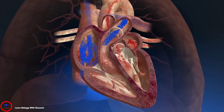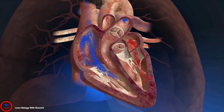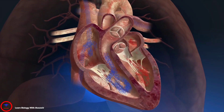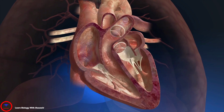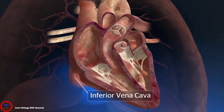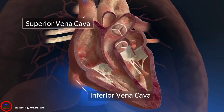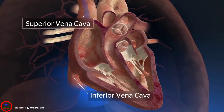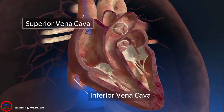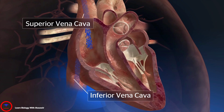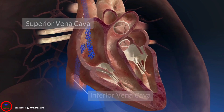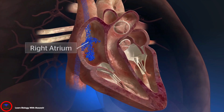Deoxygenated blood enters the right side of the heart through two large veins, the inferior and superior vena cava, emptying the blood from the body into the right atrium of the heart.